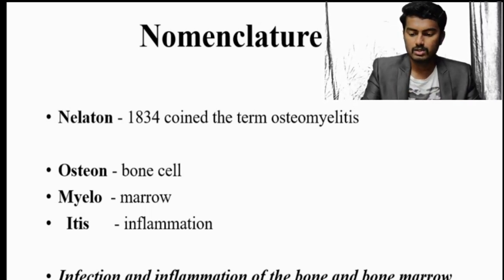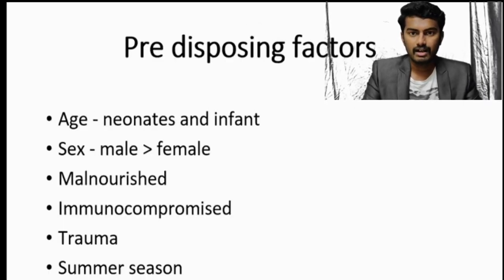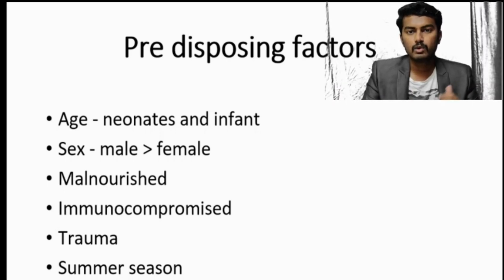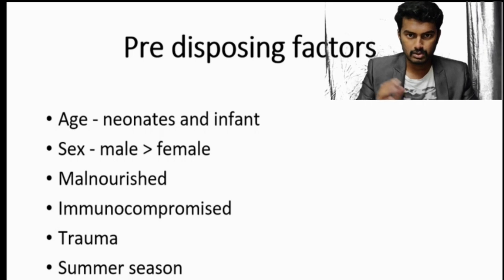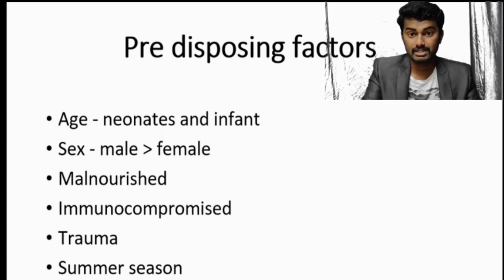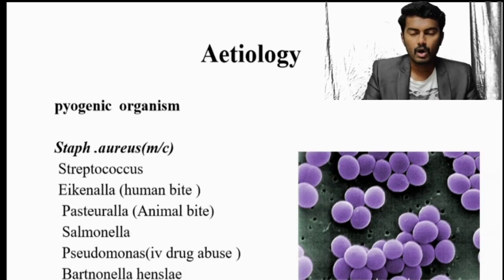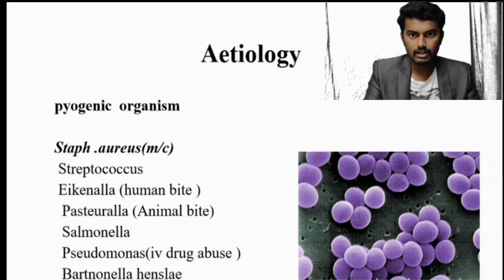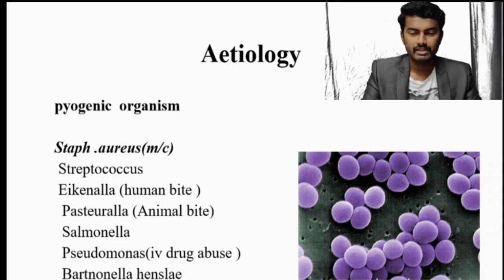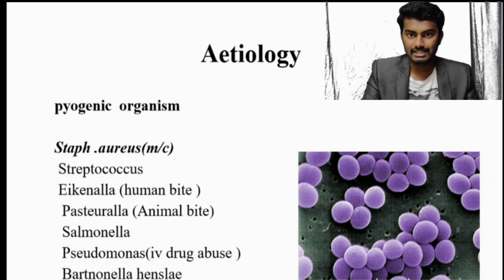Predisposing factors include: age — very young and elderly individuals are more immunocompromised; trauma — injury causes exposure of foreign bodies to bone; and summer season — more trauma events occur. Regarding causative organisms, pyogenic organisms are the most common, and of all pyogenic organisms, Staphylococcus aureus is the most common infecting organism in osteomyelitis.